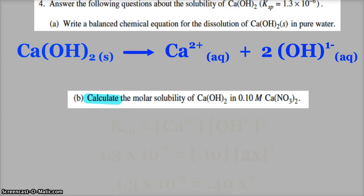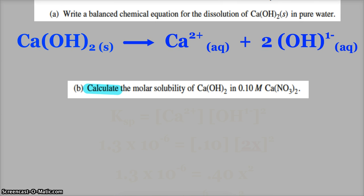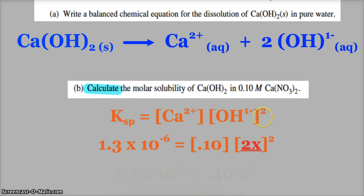Calculate the molar solubility of calcium hydroxide in 0.1 molar calcium nitrate. My Ksp value is going to be equal to the concentration of calcium times the concentration of hydroxide squared. That's my Ksp expression, and that comes from the balanced equation. 2 hydroxide, so it's squared.